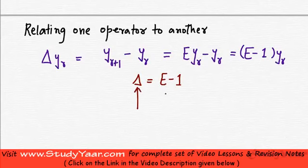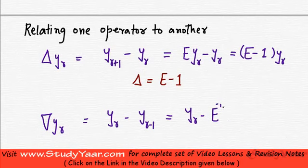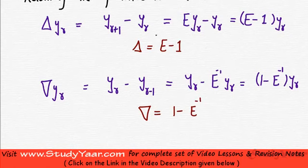That is the relation that relates your delta to your shift operator — your forward difference operator to your shift operator. Similarly, what is del YR? This is equal to YR minus the previous Y value, which is YR minus 1, which is equal to YR minus E⁻¹·YR. So this is equal to (1 minus E⁻¹)·YR. Therefore, del is equal to 1 minus E inverse. This is what relates your backward difference to your shift operator.